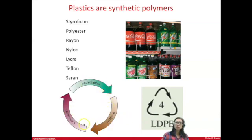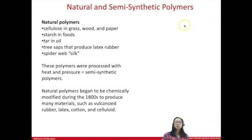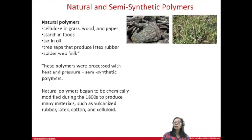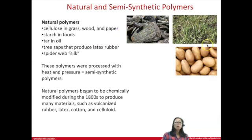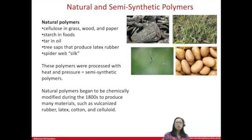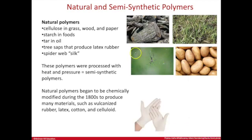Creating plastics or synthetic polymers began with nature — nature does a pretty good job of making polymers. Examples of natural polymers include cellulose in grass and wood (when you make wood into paper, those fibers are cellulose), starch in foods like potato or corn starch, and spider webs. The idea of silk is that it is a strong but flexible material that can be made into fabric, so the question became: can we make this in a lab? Natural polymers started with the idea of can we just make it better.